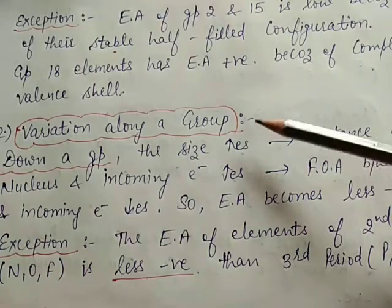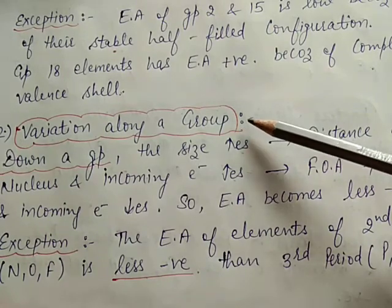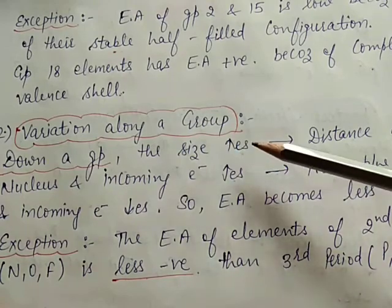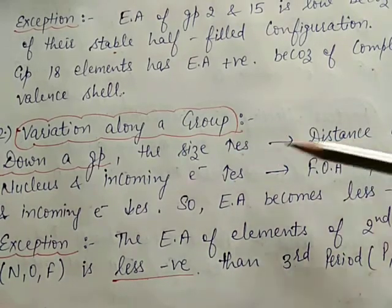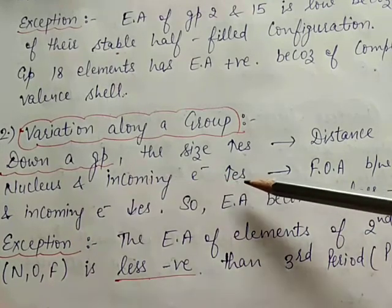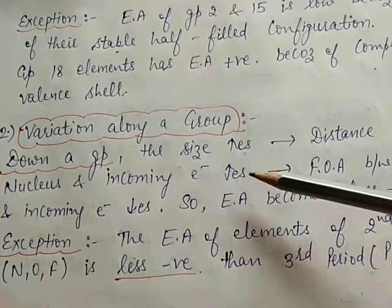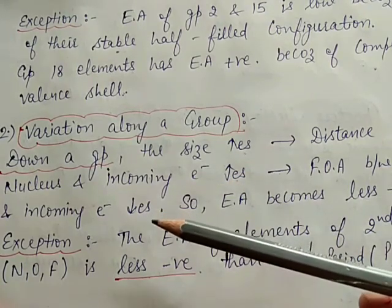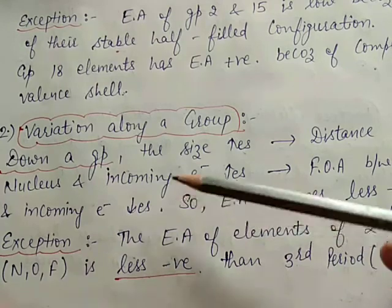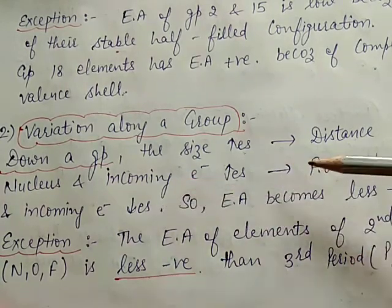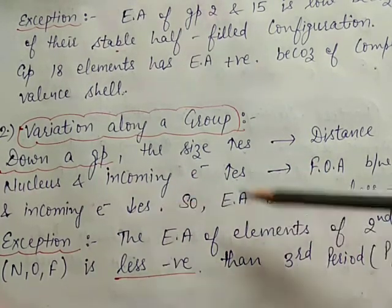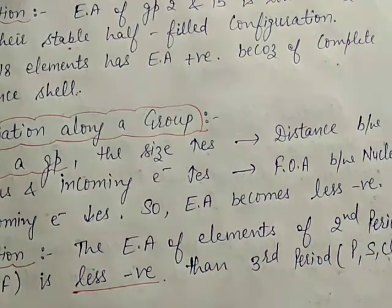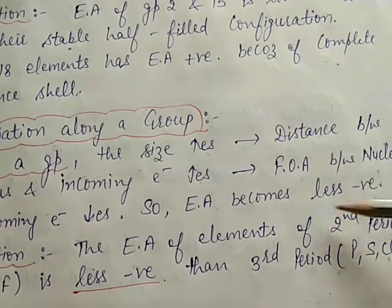Next is variation along a group. On moving down a group, atomic size increases and the distance between the nucleus and incoming electrons increases. So the force of attraction between the nucleus and incoming electrons decreases. If force of attraction decreases, it means electron affinity value becomes less negative as we go down the group.